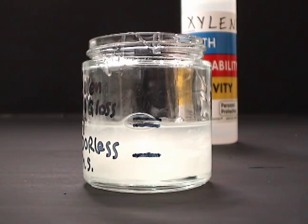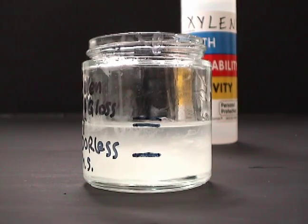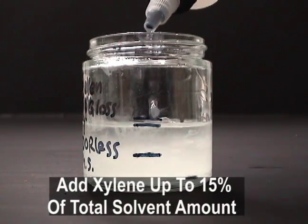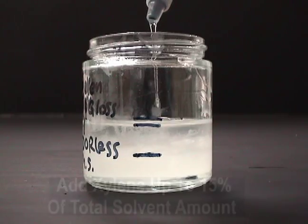Odorless mineral spirits are so called because most of the stronger volatile solvents like xylene have been removed for health concerns. By adding xylene, you will correct the mixture strength to a level similar to what it was in full strength 100% pure mineral spirits.